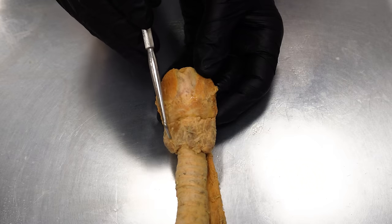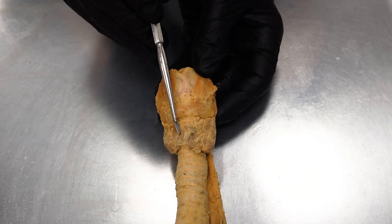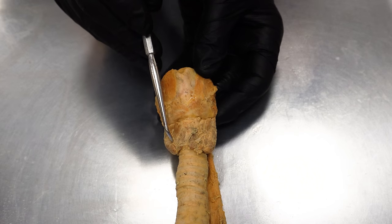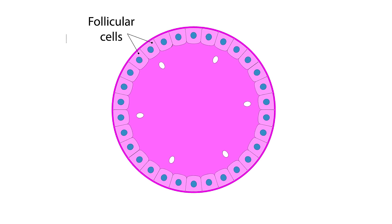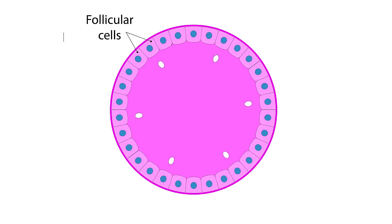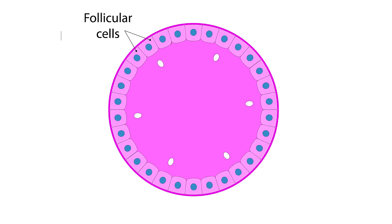If we were to zoom into the thyroid gland tissue, we would see that it's primarily made up of cells called follicular cells. These follicular cells are what produce and secrete the main thyroid hormones. But let's take a step back before we get into what these thyroid hormones do and talk about what actually activates this gland.